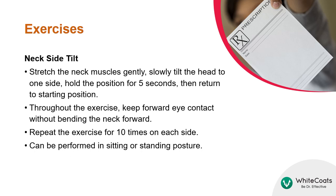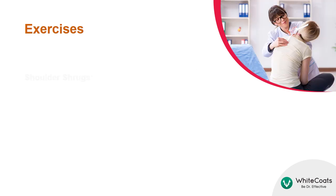In the neck side tilt exercise, stretch the neck muscles gently, then slowly tilt the head to one side and hold the position for 5 seconds. During the exercise, maintain forward eye contact without bending the neck forward. Repeat the exercise 10 times on each side.